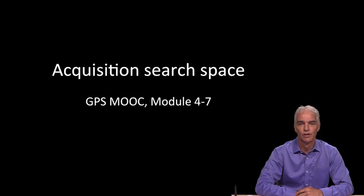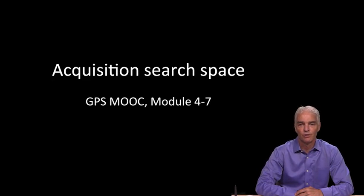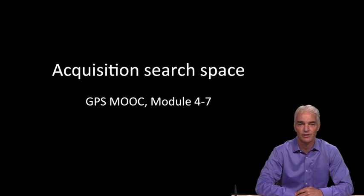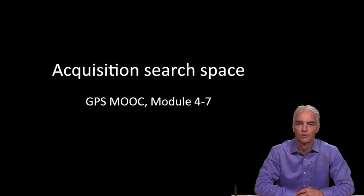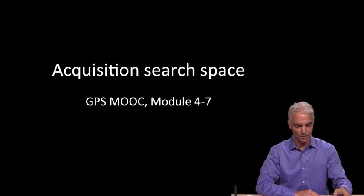Through Module 4, you've seen how the signal travels from the satellite through space into the receiver, through the correlators, and reaches this stage of the receiver where we have to search over frequency and code delay in order to find the signal. That's what we're going to look at today and get introduced to this notion of the acquisition search space.